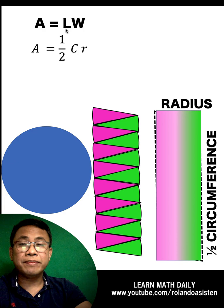So we now have, instead of L, we write one half the circumference. Instead of the W, we write the radius R.